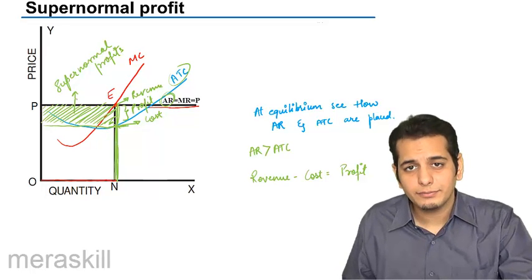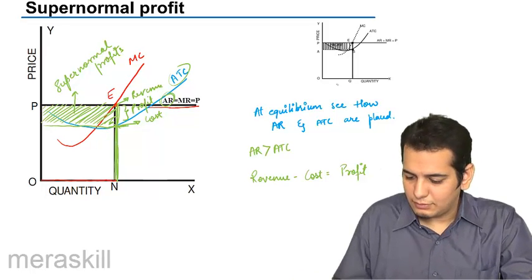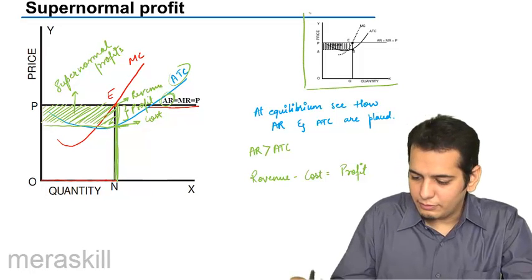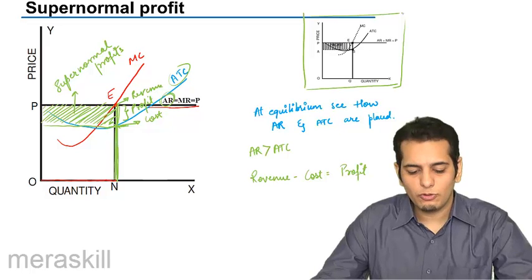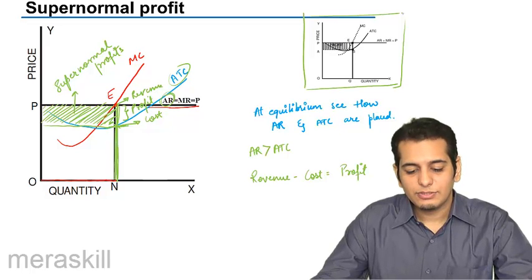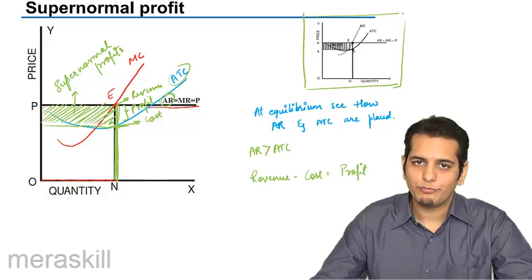The same is shown in this graph as well. I've just drawn a situation wherein you will get supernormal profits. See you in the next slide.